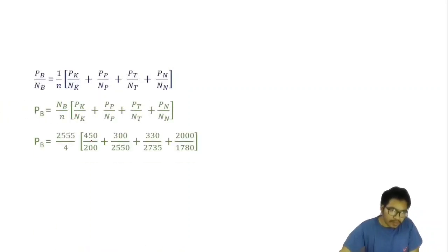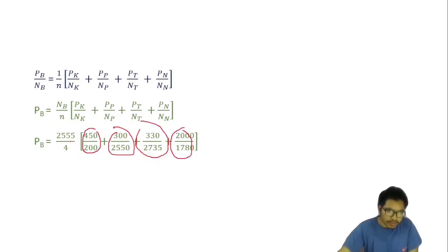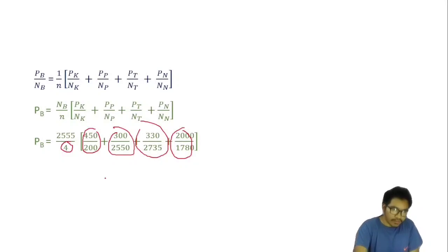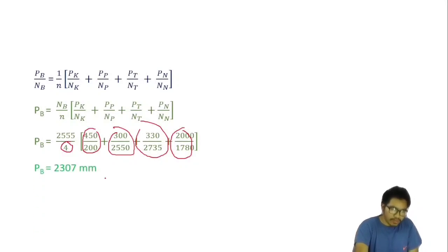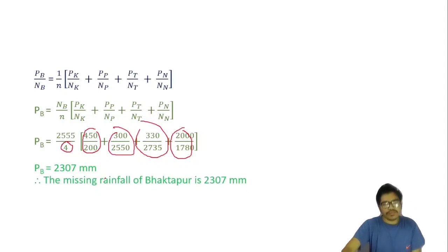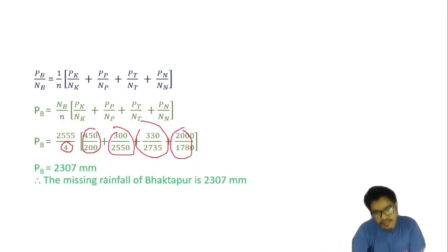There are four known stations — Kathmandu, Panibukhari, Thangkut and Narg — so n = 4 in this problem, whereas in the previous precipitation equation n was 3. Substituting all values into the formula, we get P_Voktapur = 2,307 mm. The missing rainfall at Voktapur is 2,307 mm.